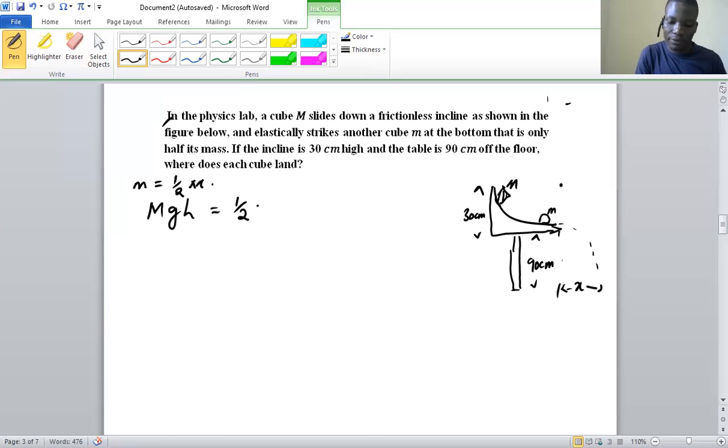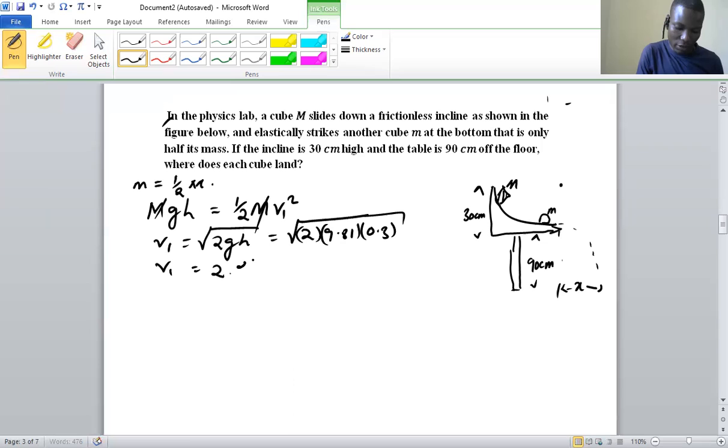So we have v1 being equal to root of 2gh, which we are going to have 2 times 9.81. And h is in centimeter, so we convert it to meters. So we have 0.3 meters. And then this speed is going to be 2.43 meters per second. That's the initial speed.